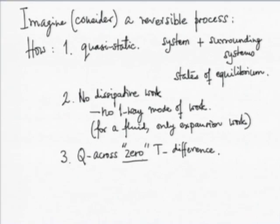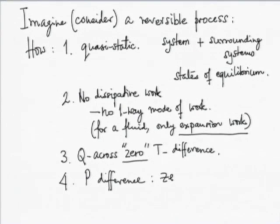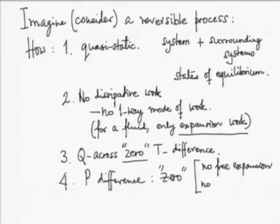We must have a negligible, infinitesimal temperature difference — that idea was used when we derived the efficiency of a Carnot cycle. Similarly, whenever expansion work is done, the pressure difference between the system and the neighboring system must also be zero. So there is no possibility in a reversible process for free expansion or sudden expansion.